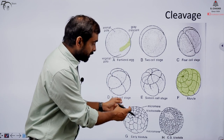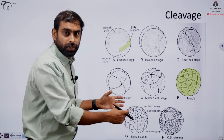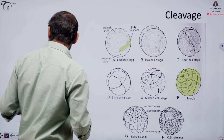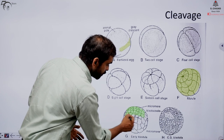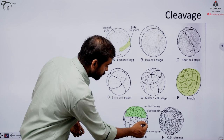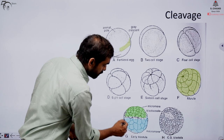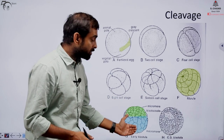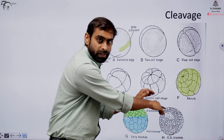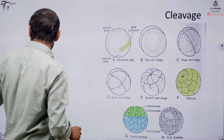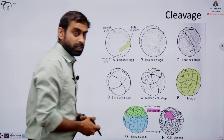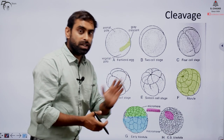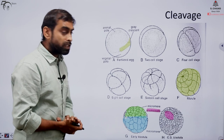Inside the morula, there is movement of cells towards the outer periphery. Some cells remain smaller, some become larger, because mid-blastula transition has occurred — the division has become asymmetric. This results in micromeres and macromeres, and also a hollow cavity inside called the blastocoel. From a solid sphere, a hollow sphere is formed — this stage is called the blastula stage.